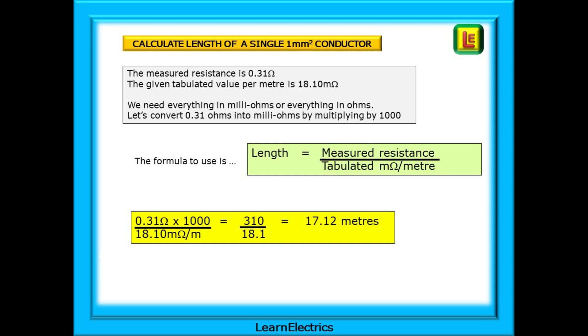The formula to use is the measured resistance divided by the tabulated milli-ohms per meter taken from the table. But we have a problem. The measured resistance is in ohms and not in milli-ohms. The solution? Multiply the measured resistance by 1,000 and convert it to milli-ohms. So our calculation now is 0.31 ohms multiplied by 1,000 and then divide this by 18.10 milli-ohms per meter. And out pops our answer. The length is 17.12 meters long. 17 meters after rounding off.